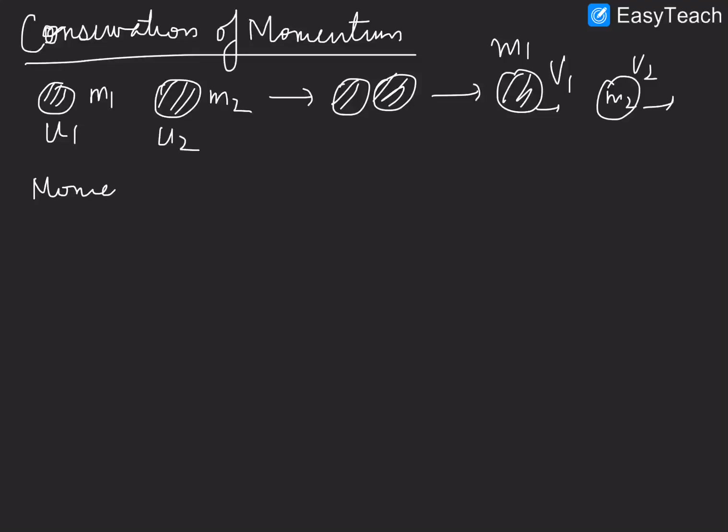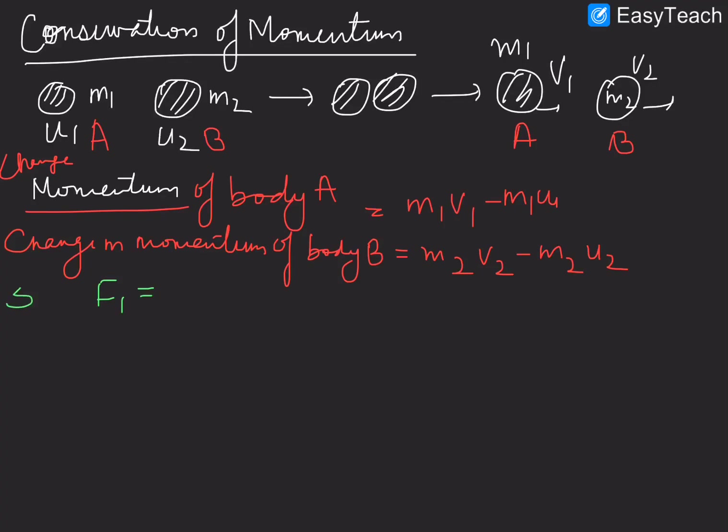So the momentum of body A, let them label as A body and B body. Similarly, this is body A and this is body B. So momentum of body A, or you can write, change in momentum of body A, can be written as M1V1 minus M1U1. Similarly, change in momentum of body B. Now according to Newton's Second Law, force acting on body A, FA, is equal to rate of change of momentum. That is, we can link this as M1V1 minus M1U1 upon change in time, let us consider it to be delta T. Similarly, force acting on body B, M2V2 minus M1V1 upon same time interval delta T.